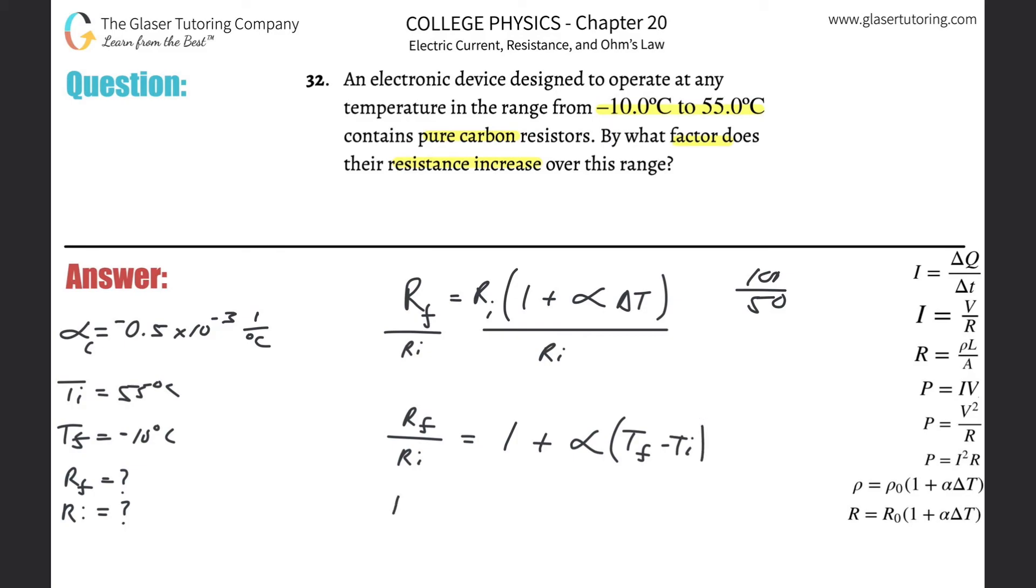What are the values that we know? Well, we know the final here, one plus alpha. We also know alpha. It's negative 0.5 times 10 to the minus three. We also know the final temperature here we said is going to be negative 10 minus the positive 55. And let's just calculate it now. And basically we're going to find our answer.